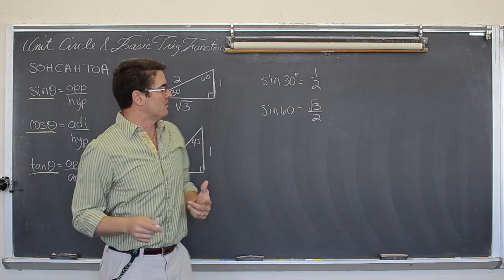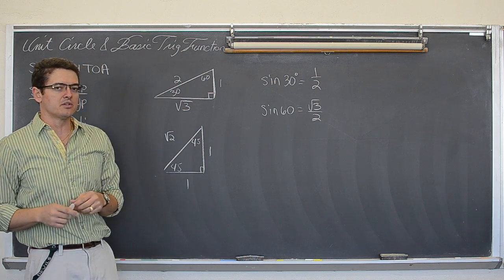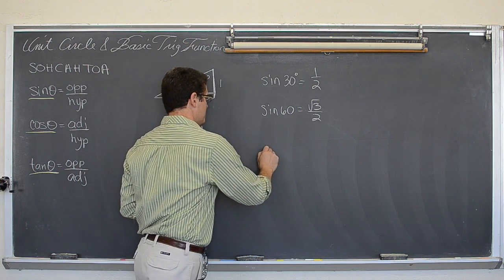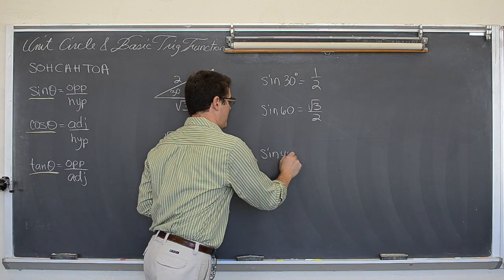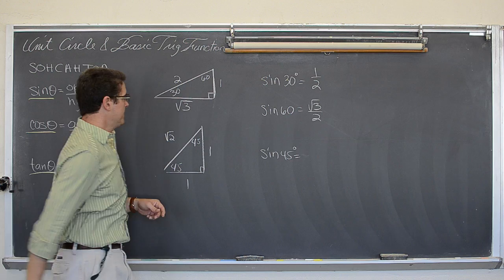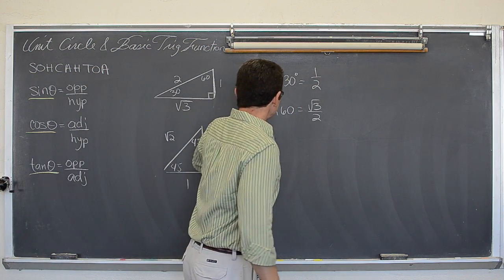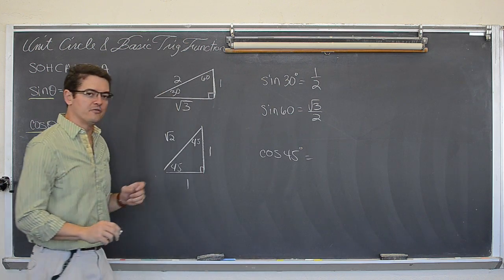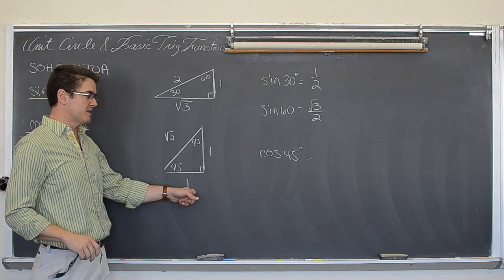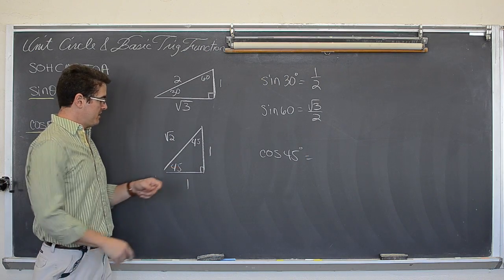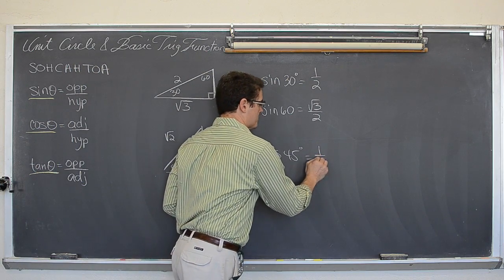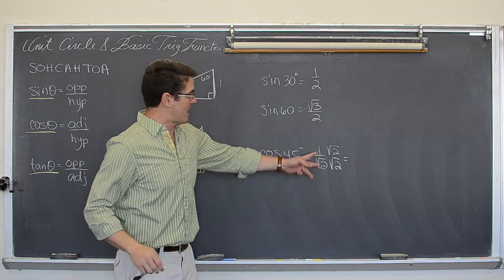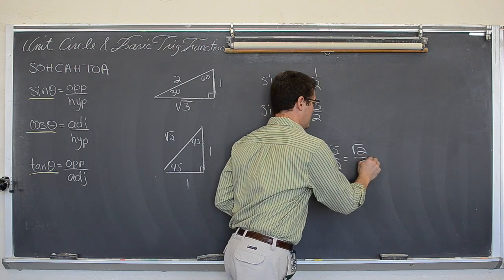I just used that one specialty triangle from geometry to set up a couple of trig ratios. Let's do the cosine of 45 degrees. Here is my 45 degree angle, and cosine is adjacent over hypotenuse, which is 1 over square root of 2. We want to never leave a square root in the denominator, so I am going to rationalize that and get square root of 2 over 2.